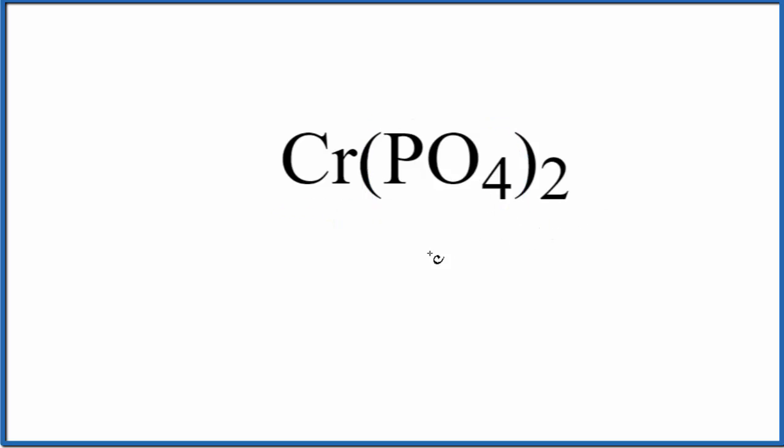The first thing we'll do is write the name for Cr as it appears on the periodic table. That's chromium. Next, we have this polyatomic ion, PO4. You've either memorized that PO4 is phosphate, the phosphate ion, or if you're allowed, you look this up on a table of polyatomic ions.